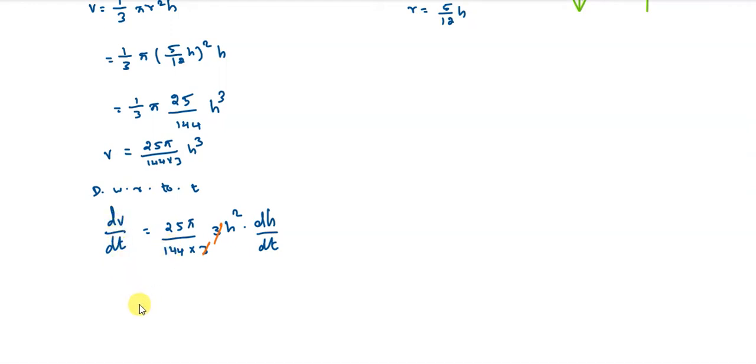Now we substitute. dv/dt is 10, which equals 25π/144 times h² where h equals 8, so 8 times 8, times dh/dt. Therefore, 10 equals 25π/144 times 64 times dh/dt.